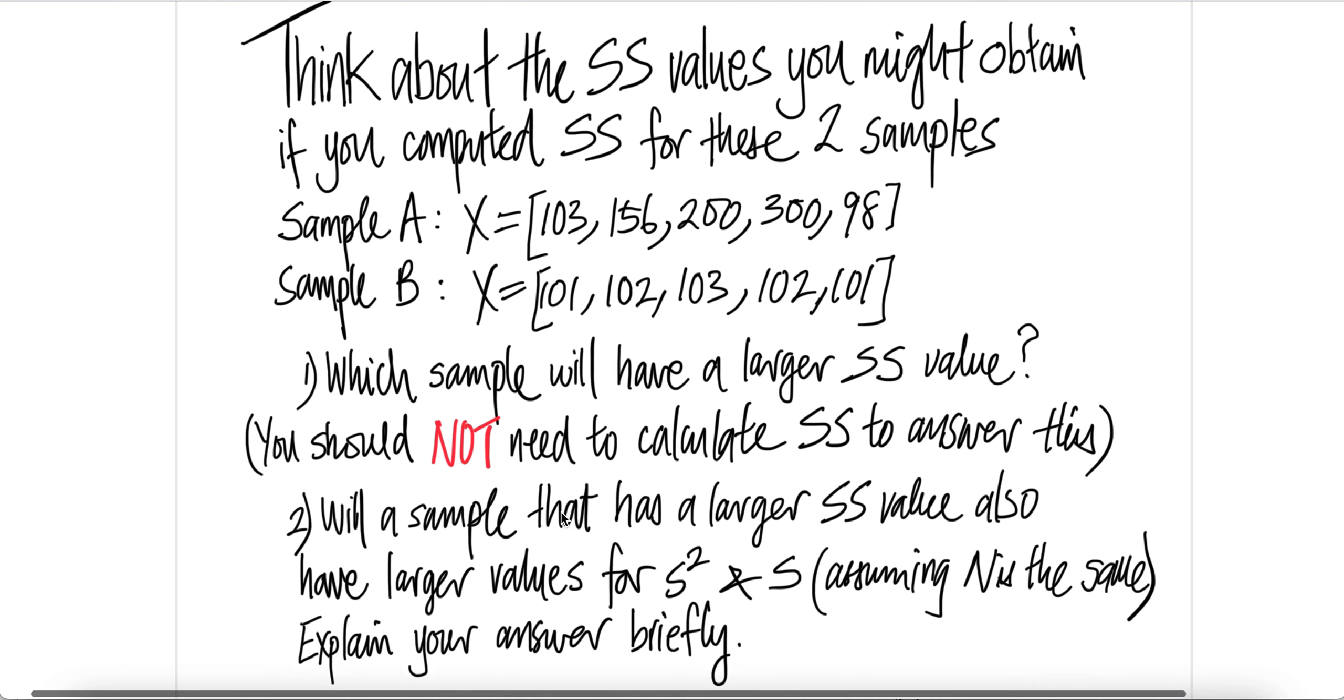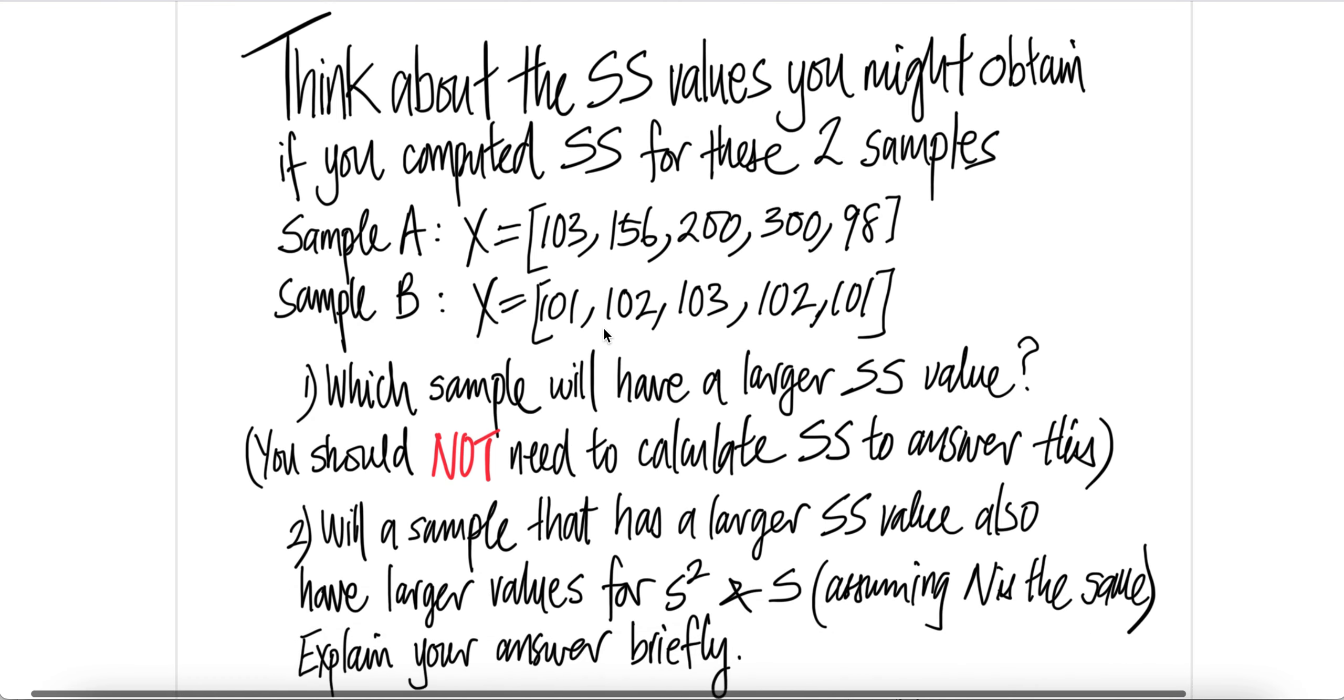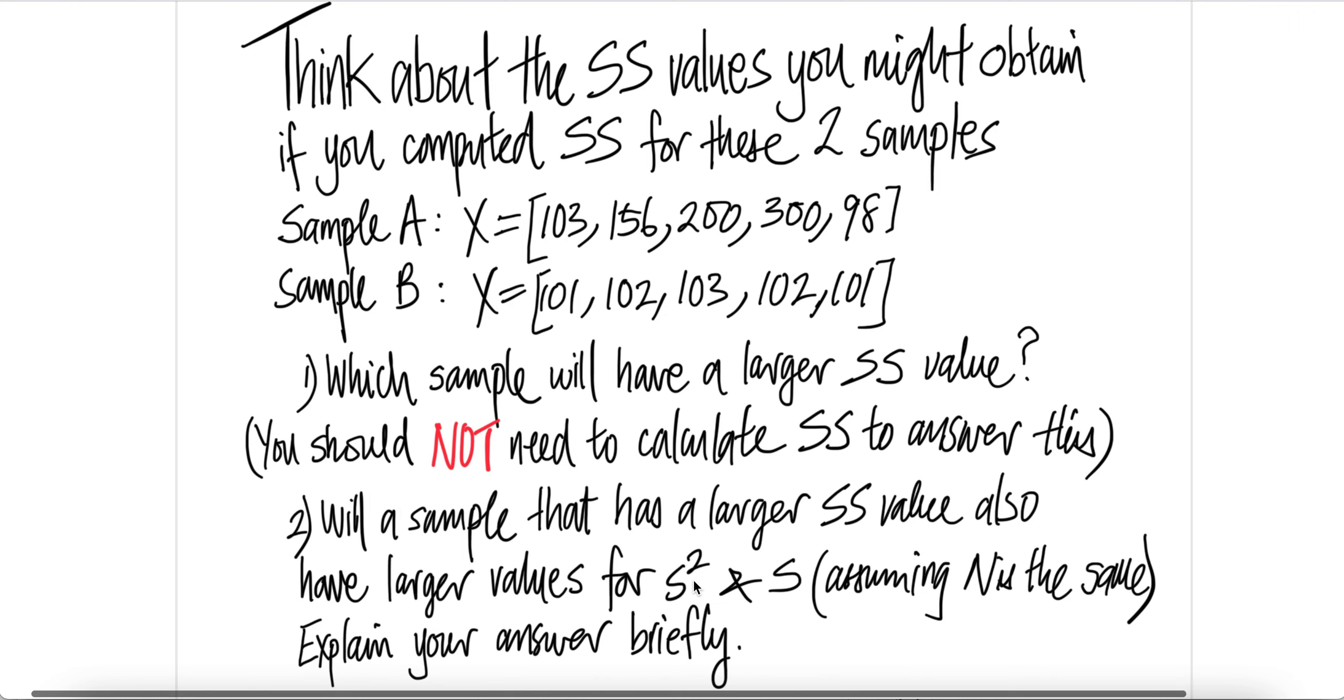Yes. Sample size that has a large sum of squares value will have large sample variance and also large standard deviation because sample variance depends on the sum of squares. And S depends on the variance because S is square root of S squared. So if this is large, therefore this is large. If this is large, the standard deviation will also be large too.